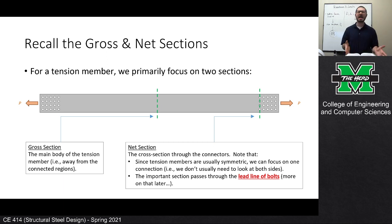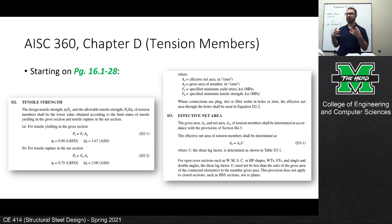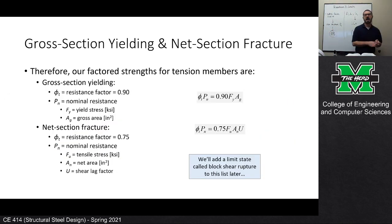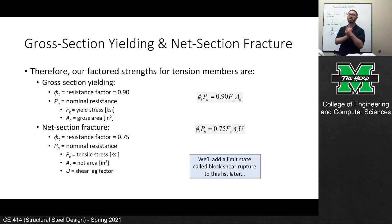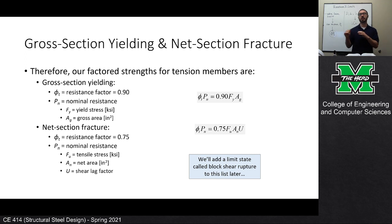Section D3 defines AE as the effective net area, which equals the net area AN times a shear lag factor U. That's the big topic of today — shear lag and slenderness, along with D1. Summarizing the two φPN expressions: for gross section yielding, φPN = 0.9 × FY × AG; for net section fracture, φPN = 0.75 × FU × AN × U. There are a lot of terms, but we'll build this out fully on Wednesday.